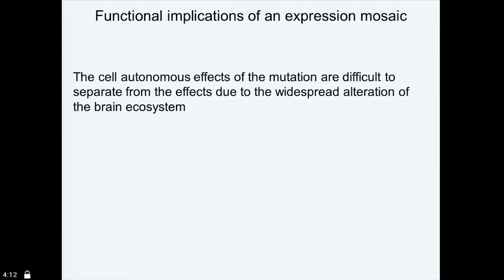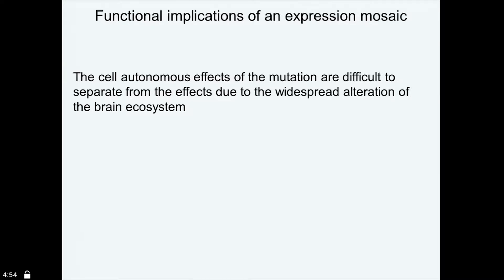The fact that there is an expression mosaicism actually has lots of experimental implications if you are interested in the properties of single neurons, and if you are interested to study that in vivo rather than an in vitro system, because whatever neuronal and circuitry property you study, you always have to ask yourself if the impairment you see is caused directly by the mutation — if the cell carries the mutation — or if that comes from the fact that the entire ecosystem of the brain has been altered. And a very complicating factor is that when you are doing your study, you really don't know the genotype of the cell.